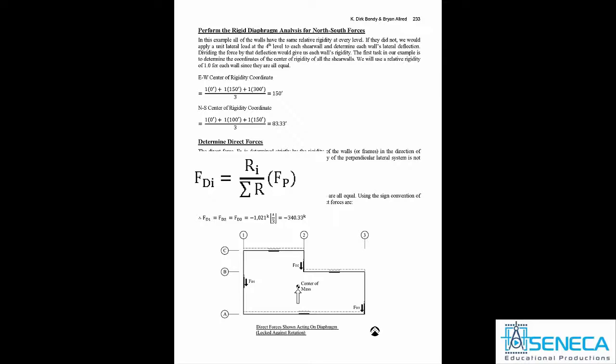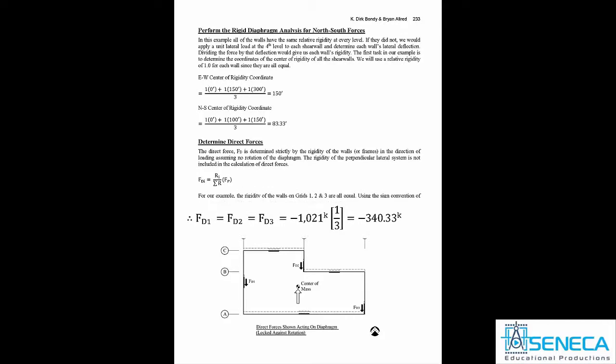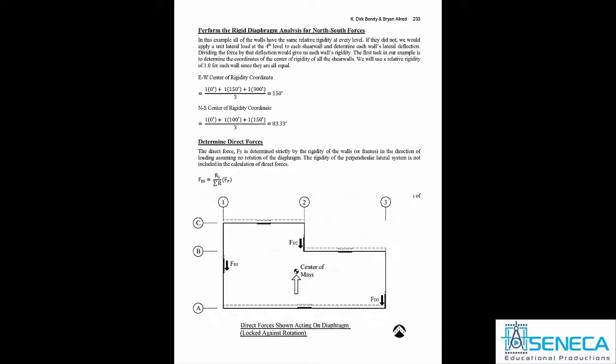Now we'll determine the direct design forces. These forces are simply divided up based on the rigidity of each member with no rotation occurring. Direct design forces are the rigidity of the particular seismic element divided by the sum of all rigidities for elements resisting load in that direction, multiplied by the FCP force. In this case, since all three walls have the same rigidity, walls 1, 2, and 3 will each take a 340.33 kip direct force. Under direct forces, the diaphragm is assumed locked against rotation.